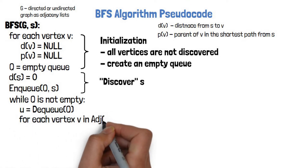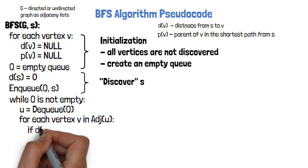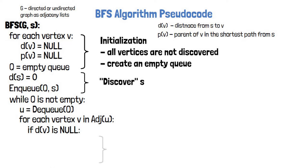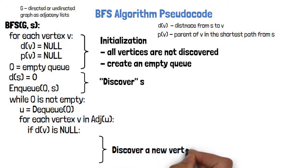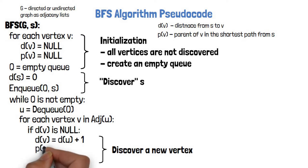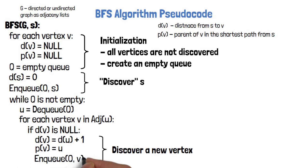For each neighbor V, we first check if its distance DV is null. If so, it is the first time V is discovered and we need to handle it. Otherwise, it was already discovered and we ignore it. So if it is null, we set its distance to be the distance of the vertex that discovered it plus 1. We also save the vertex that discovered it as the parent, and then enqueue V so it will be processed later.